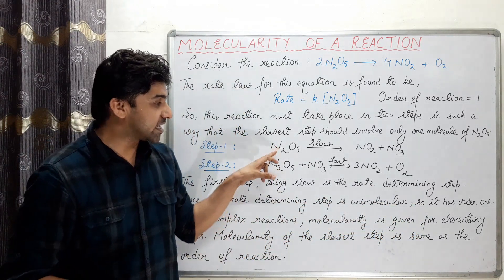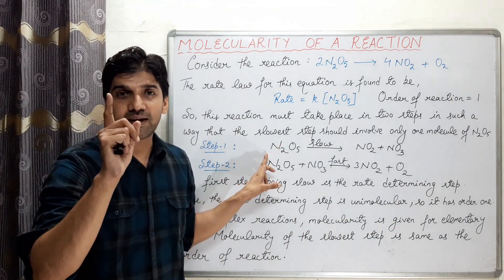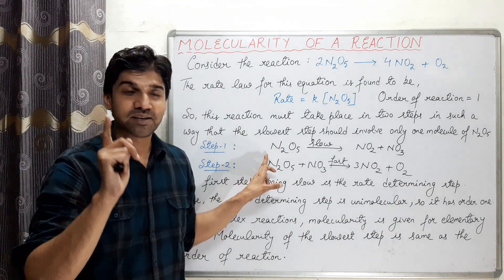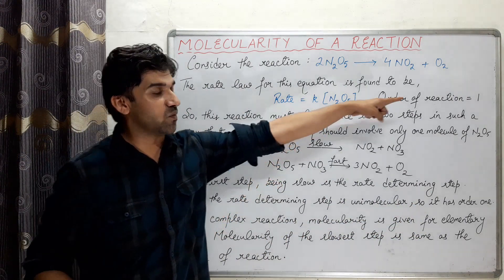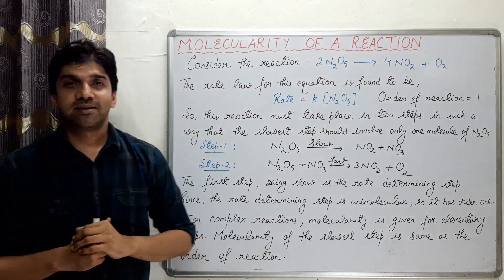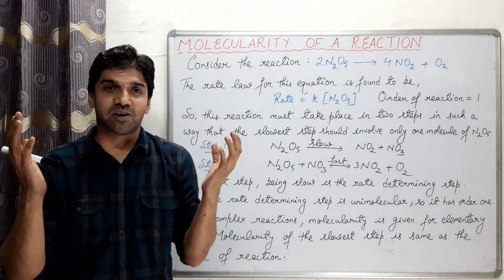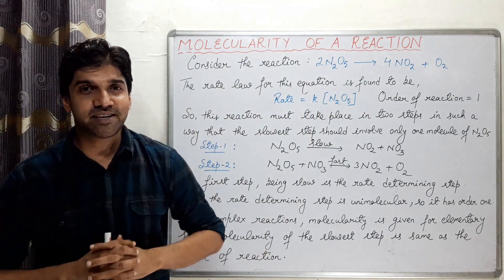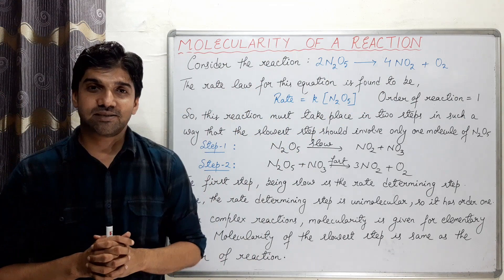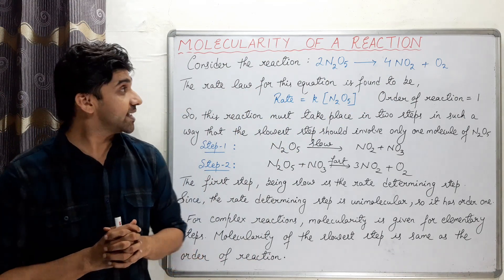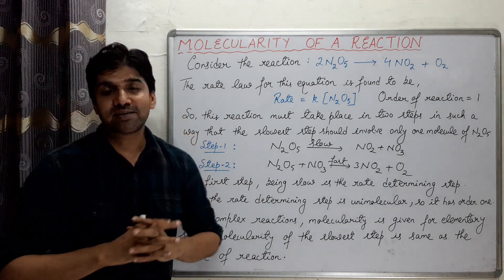In this case, the molecularity of the slowest step is 1, and the order is also 1. This is the concept of molecularity and order of reaction in the case of complex reactions.